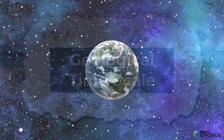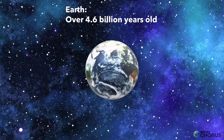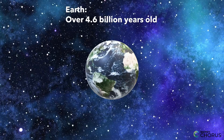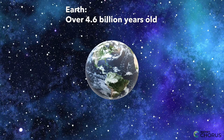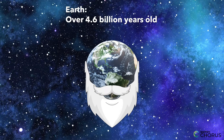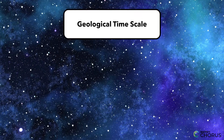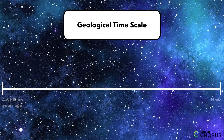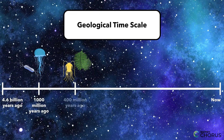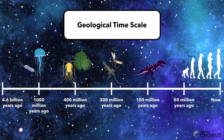Did you know that the Earth is over 4.6 billion years old? That's a really long time, so long that it's hard for us to imagine. But scientists have found a way to organize all of that history into different time periods. This is called the Geological Time Scale.